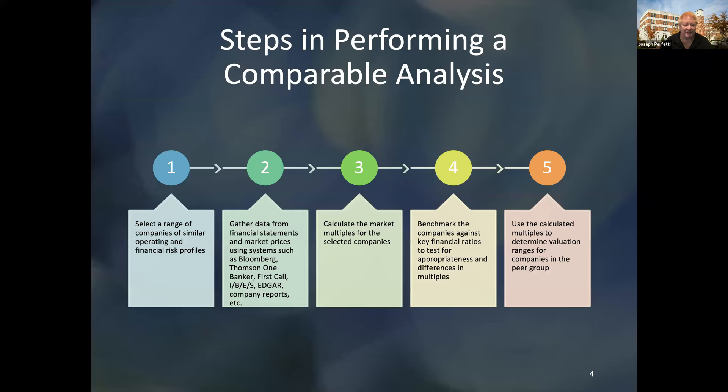The steps to do a multiple analysis are a five-step process. The first step — and one of the most important — is to find a peer group of similar companies. By similar, they should have similar financial profiles, similar operating profiles, similar margins, similar growth rates, and similar levels of overall performance. If they are far different, they're not going to be as comparable.